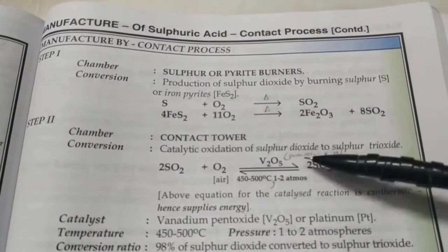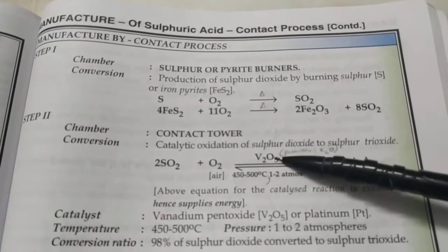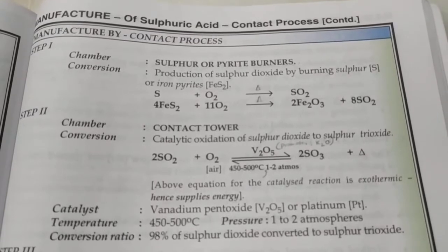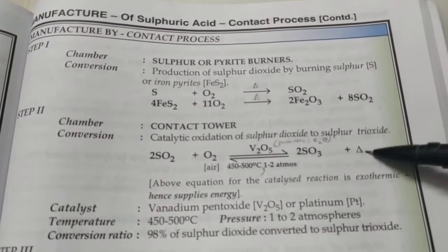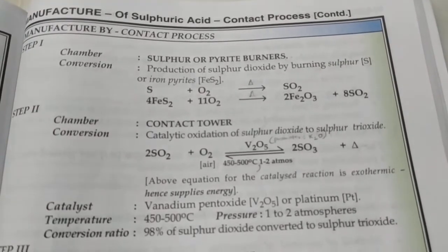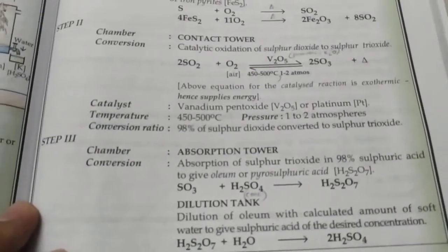Notice the conditions: vanadium pentoxide catalyst, temperature 450-500°C and pressure 1-2 atmospheres. It's an exothermic reaction and it's a reversible reaction, that means Le Chatelier's principle will be applicable here.